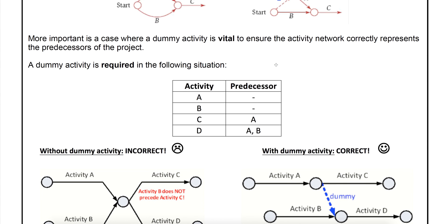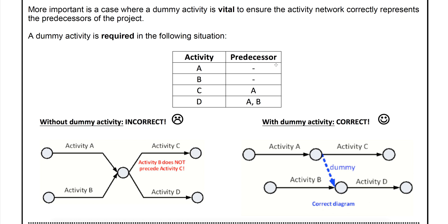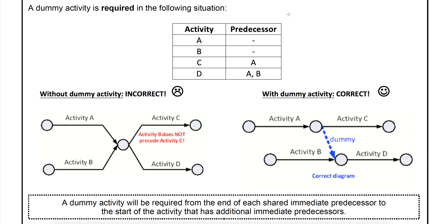I want to spend time discussing this because this is why a dummy activity is vital. If you have a look at this very small predecessor table, you'll see we've got this situation. C and D both need A to be done so they share A as a predecessor, however D requires B to be done and C does not. So C and D share A as a predecessor but not B. Why is this an issue?